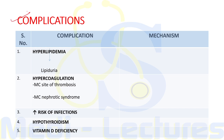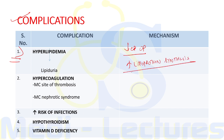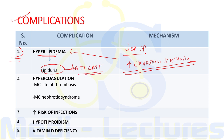The first complication is hyperlipidemia. Since oncotic pressure is decreased in nephrotic syndrome, there is a compensatory increase in lipoprotein synthesis to maintain this pressure. This lipoprotein synthesis is responsible for hyperlipidemia, which in turn leads to lipiduria — excretion of lipids in the urine — forming fatty casts or lipid casts.